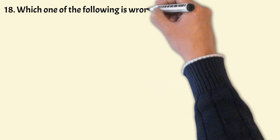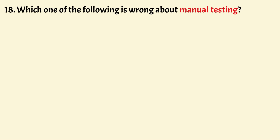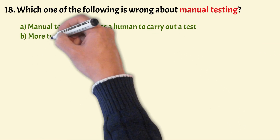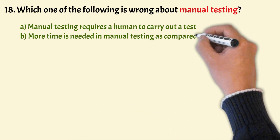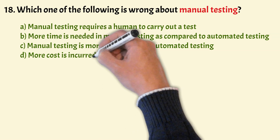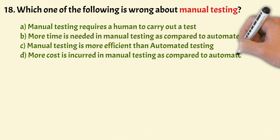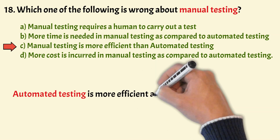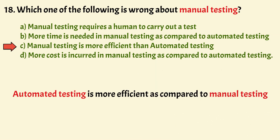Next: Which one of the following is wrong about manual testing? Options: manual testing requires a human to carry out a test; more time is needed in manual testing compared to automated testing; manual testing is more efficient than automated testing; or more cost is incurred in manual testing. The correct option is Option C — manual testing is more efficient than automated testing is wrong. Automated testing is more efficient as it follows a script, is faster, reliable, and less time consuming.